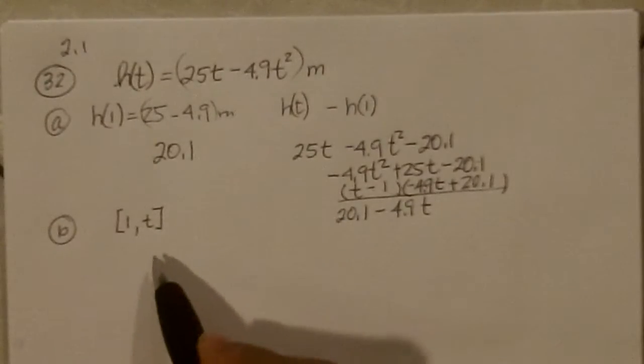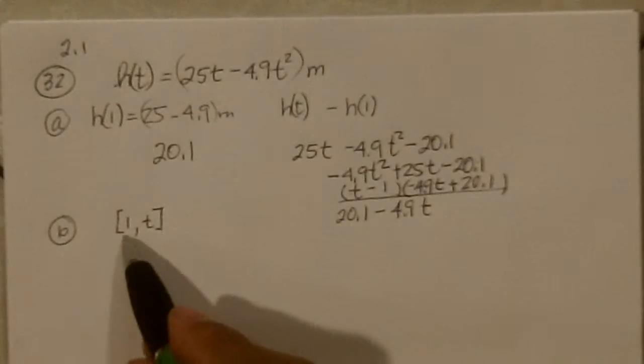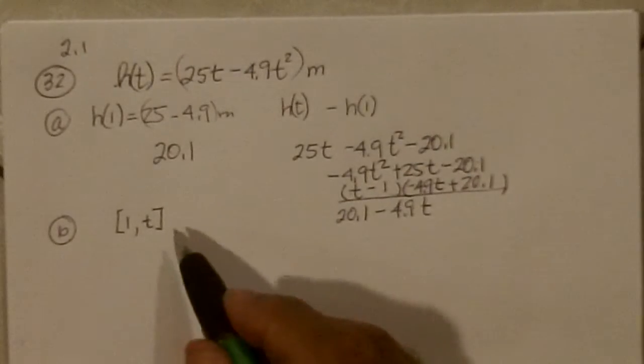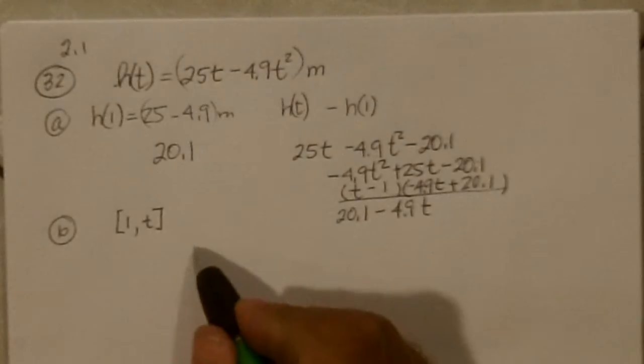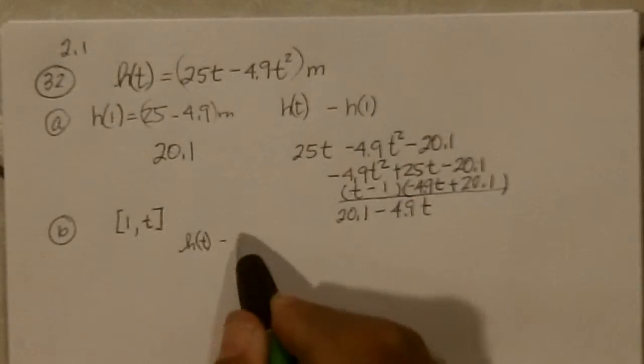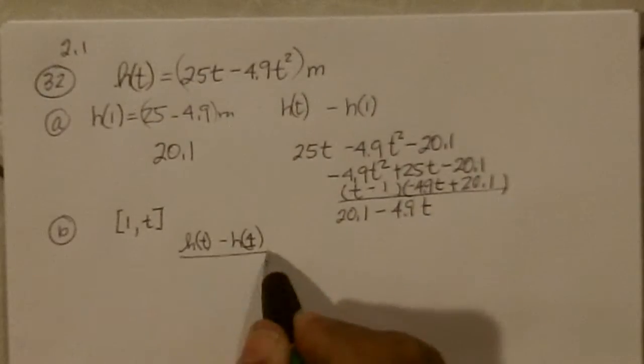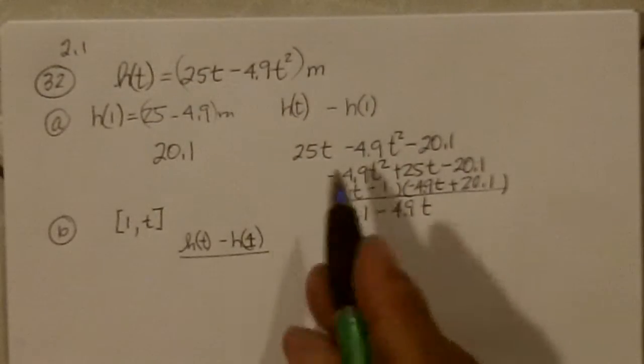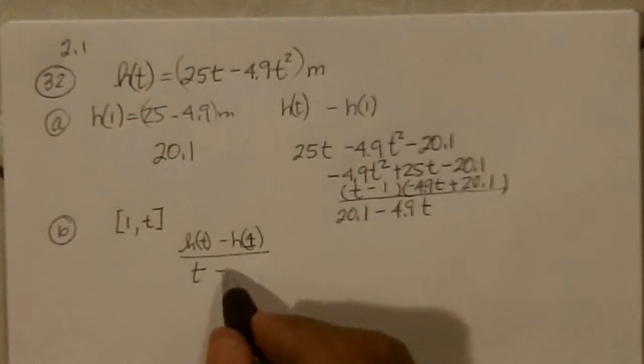So now it says figure out the average velocity on the interval from 1 to t. So you would use the difference quotient, which is h(t) - h(1) over t - 1.